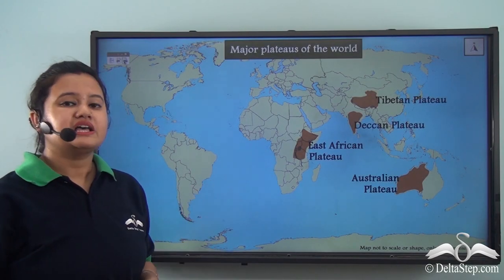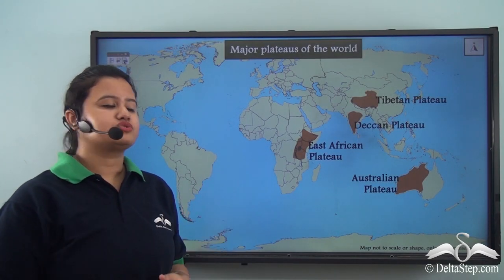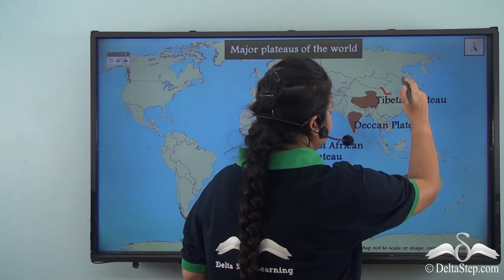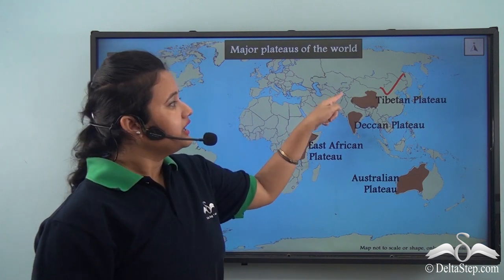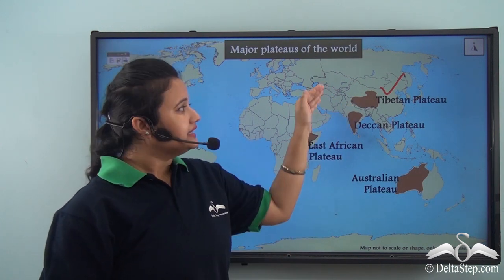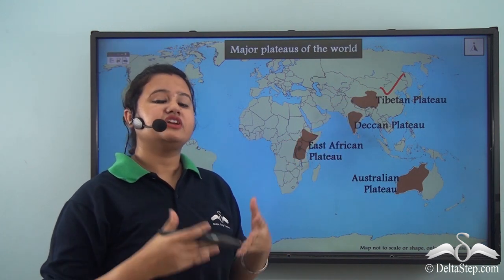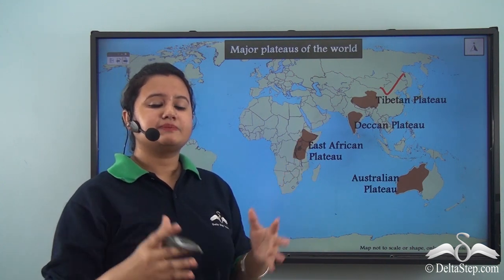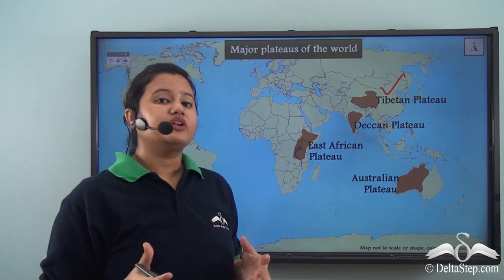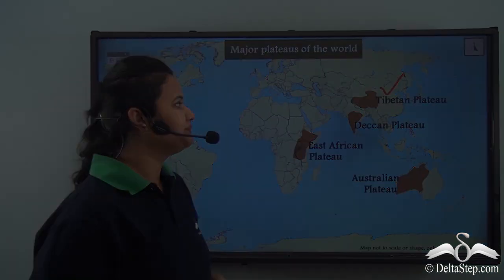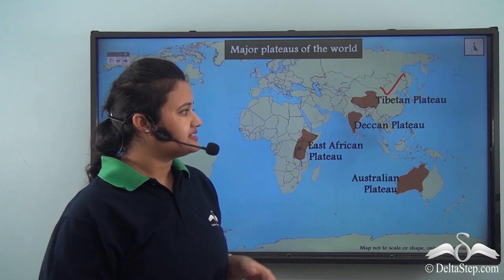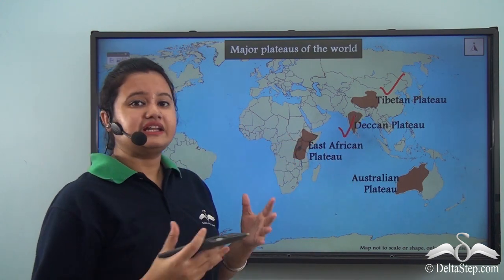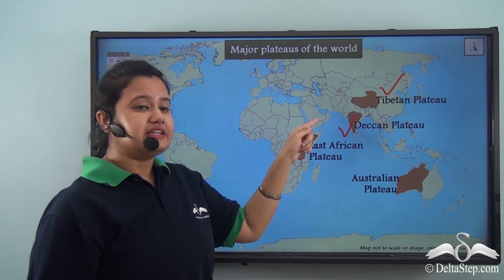This world map shows some of the major plateaus of the world. The Tibetan Plateau is situated in China and is the highest and largest plateau in the world, known as the roof of the world. The second plateau is the Deccan Plateau, which is part of the Indian subcontinent and is one of the oldest plateaus in the world.